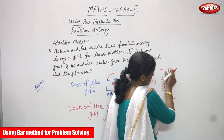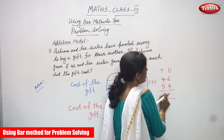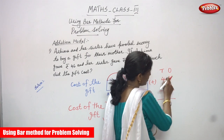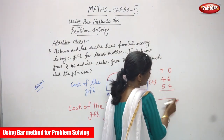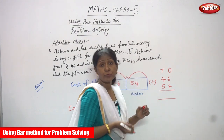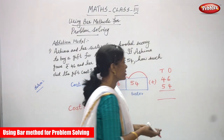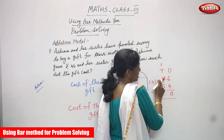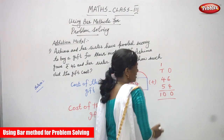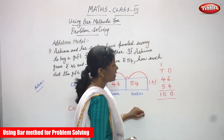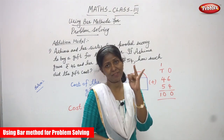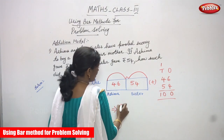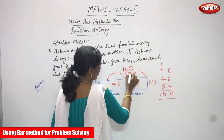These are two-digit numbers: 46 and 54. First write the place values, then we add. Starting with the ones: 6 plus 4 — 6 in the mind, count 4 more on fingers: 7, 8, 9, 10. So put 0 here and carry 1 to the tens place. Then tens: 4 plus 1 is 5, and 5 plus 5 is 10. So the answer is 100.